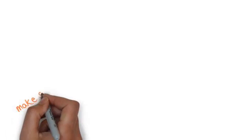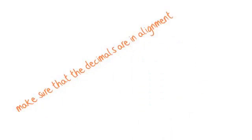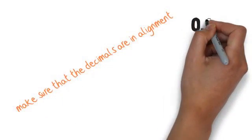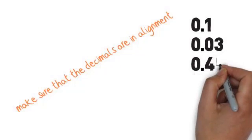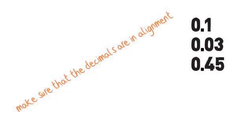The first thing I am going to do, is put the decimals on top of each other, ensuring that the decimal points are lined up. 0.1, 0.03, 0.45, 0.58. You would add the digits together, giving you this answer.